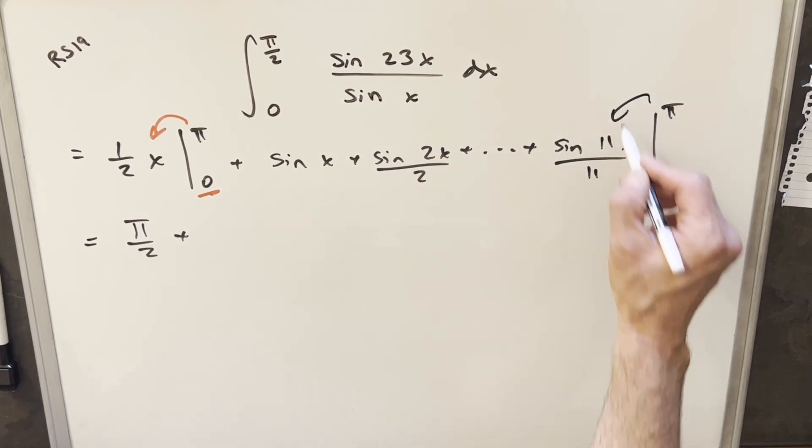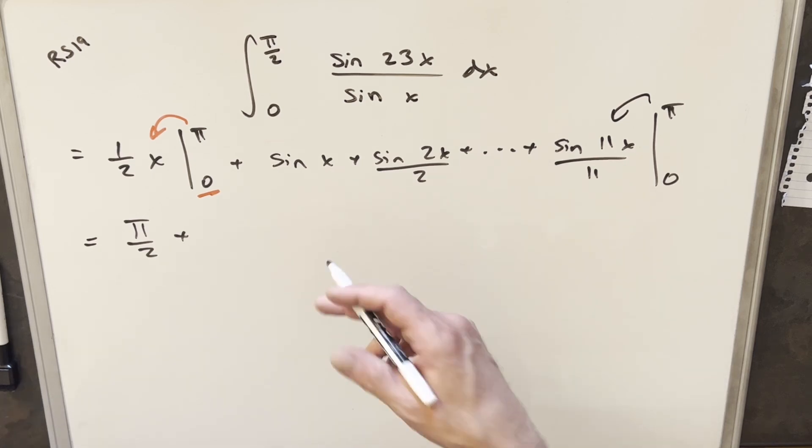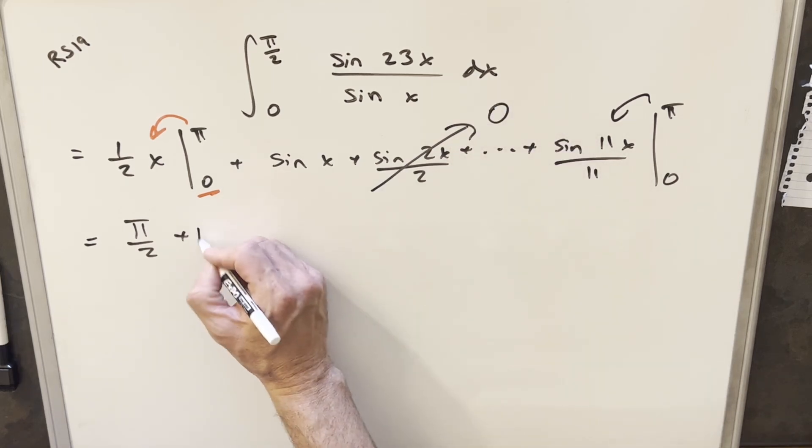But then when we take our pi and plug it in, you'll notice sine of pi is zero, sine of 2 pi is zero, sine of 3 pi is zero, sine of 4 pi is zero, all the way to sine of 11. So all these are zero. So this whole piece is going to zero.